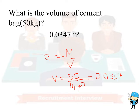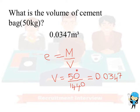The seventh question is: what is the volume of a cement bag? The volume of the cement bag is 0.0347 meter cube. Using the formula: density equals mass divided by volume, where mass is 50 kg and the density of cement is 1440 kg per meter cube, we can calculate the volume of the cement as 0.0347 meter cube.